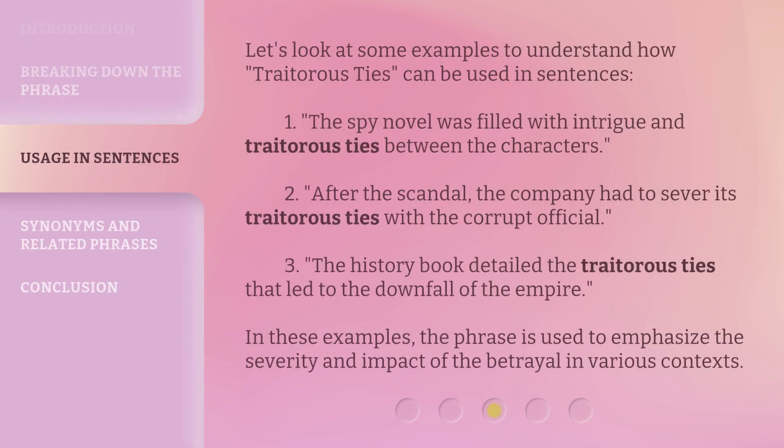Let's look at some examples to understand how Traitorous Ties can be used in sentences. First, the spy novel was filled with intrigue and traitorous ties between the characters. Second, after the scandal, the company had to sever its traitorous ties with the corrupt official. Third, the history book detailed the traitorous ties that led to the downfall of the empire. In these examples, the phrase is used to emphasize the severity and impact of the betrayal in various contexts.